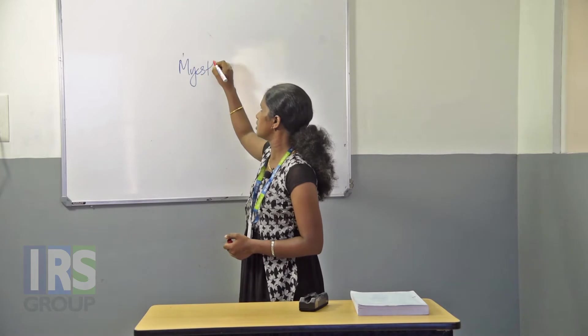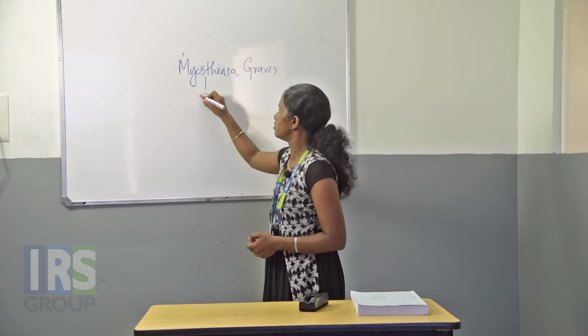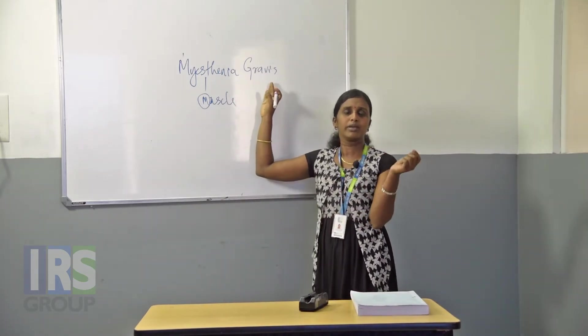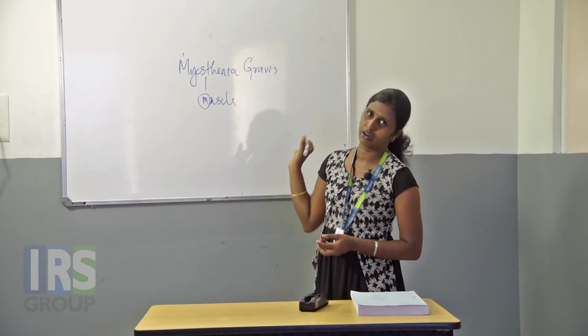We start with myasthenia gravis, a central nervous system neuromuscular disorder. Myasthenia gravis is characterized by extreme weakness or fatigue of the voluntary muscles — those we can control, such as blinking, chewing, flexion, and extension. Involuntary muscles, like those controlling peristaltic movement or heartbeat, are not controllable and are not affected in this condition.